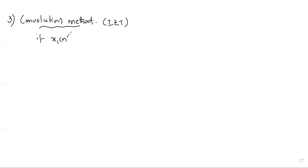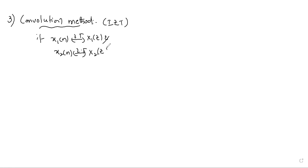What is the statement of the convolution theorem? If X1 of n has Z-transform X1 of Z, and X2 of n has Z-transform X2 of Z, then the convolution property states that X1 of n linearly convolved with X2 of n has Z-transform equal to X1 of Z multiplied by X2 of Z.